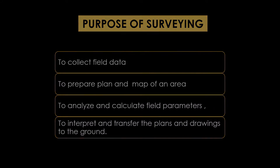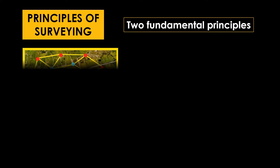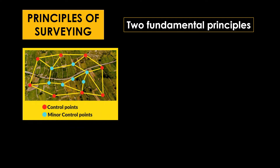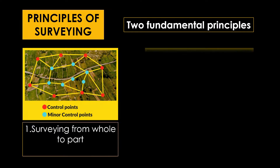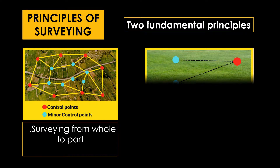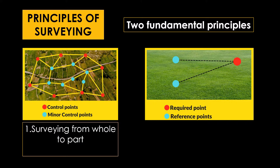What are the principles of survey? There are two fundamental principles of survey. The first one is surveying from whole to part. The second one is location of a point by measurement from two points of reference.